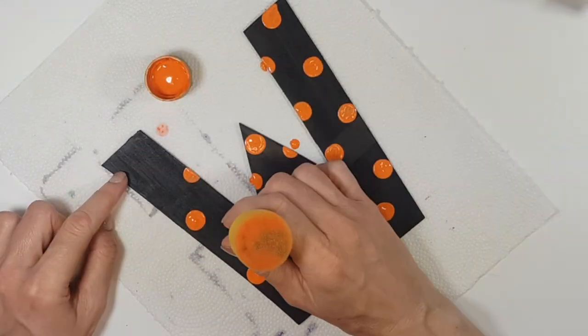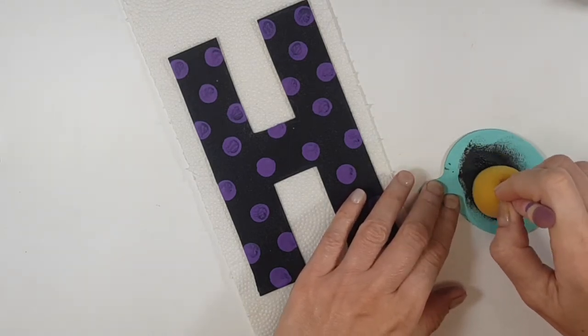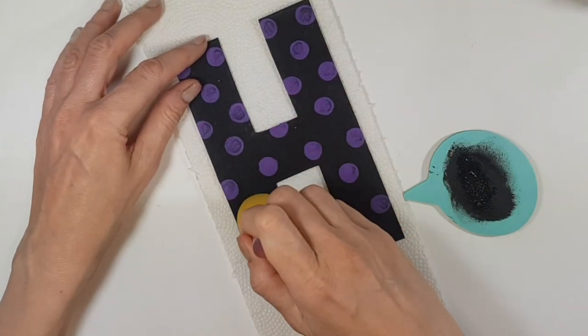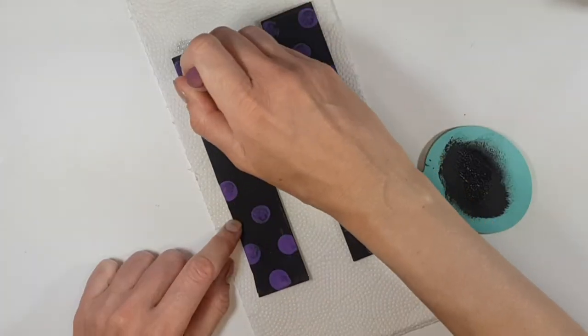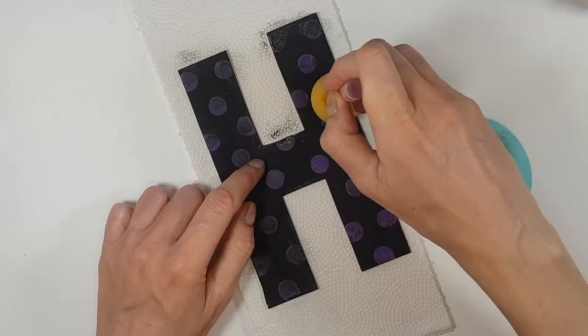I gave them just this coat, and I waited for them to dry. I'm going to be taking my sponge again, and my black acrylic paint, just a bit of black paint. I'm just going to be sponging those dots, because we don't want to cover those dots.